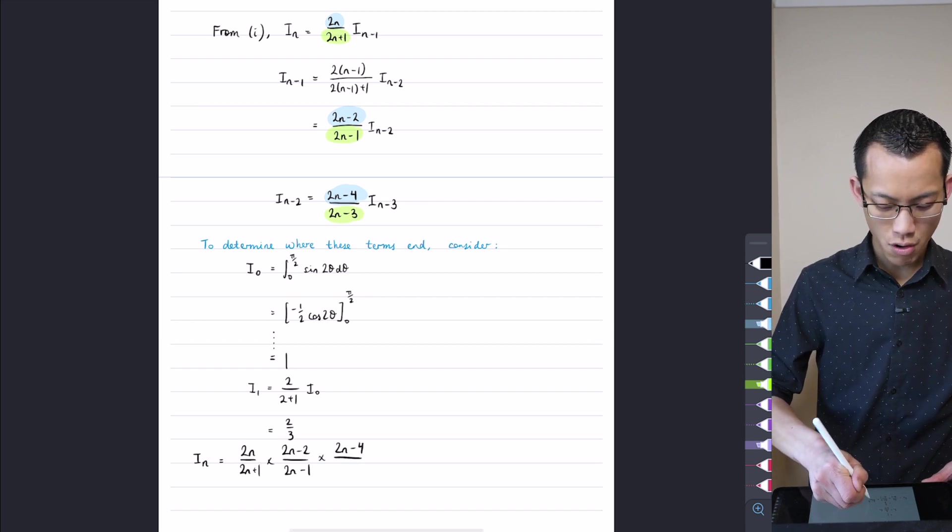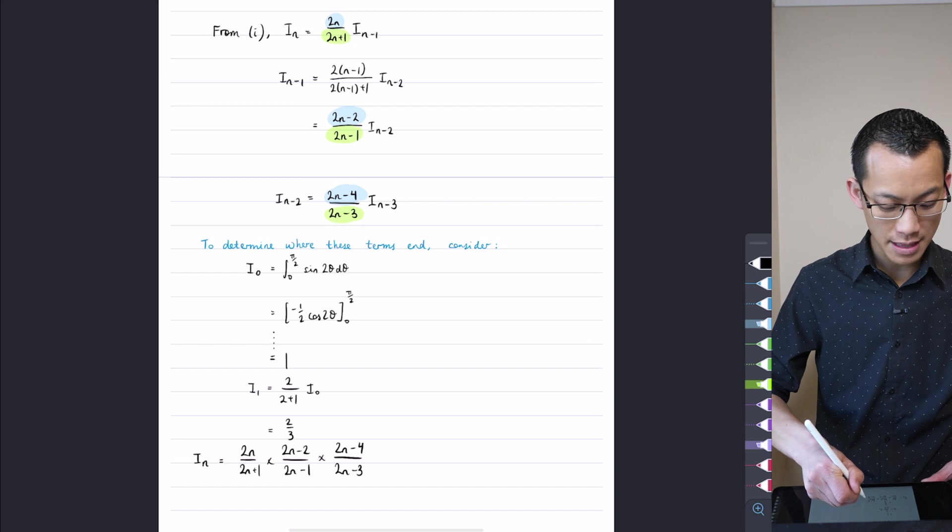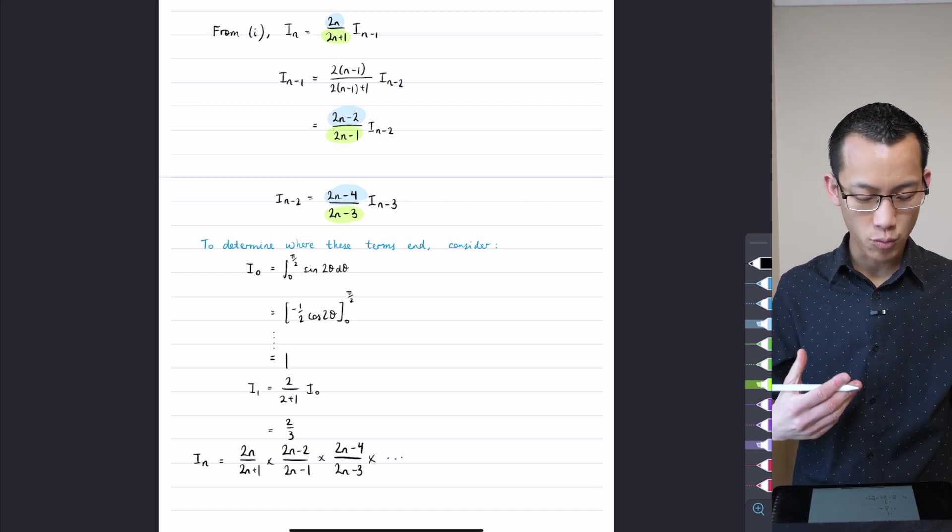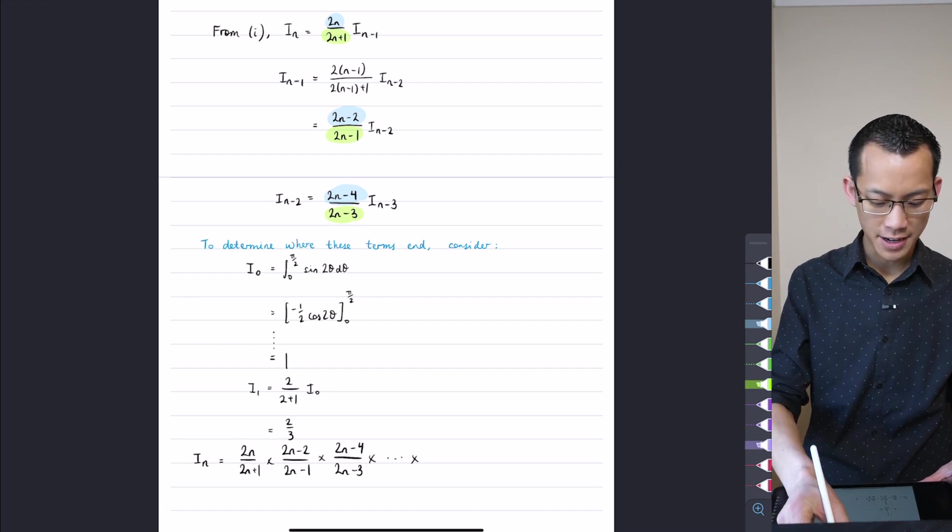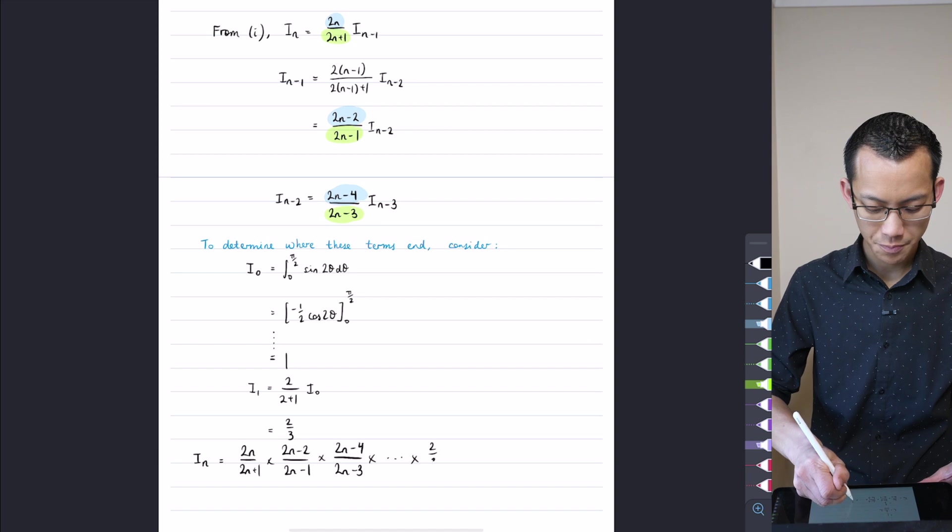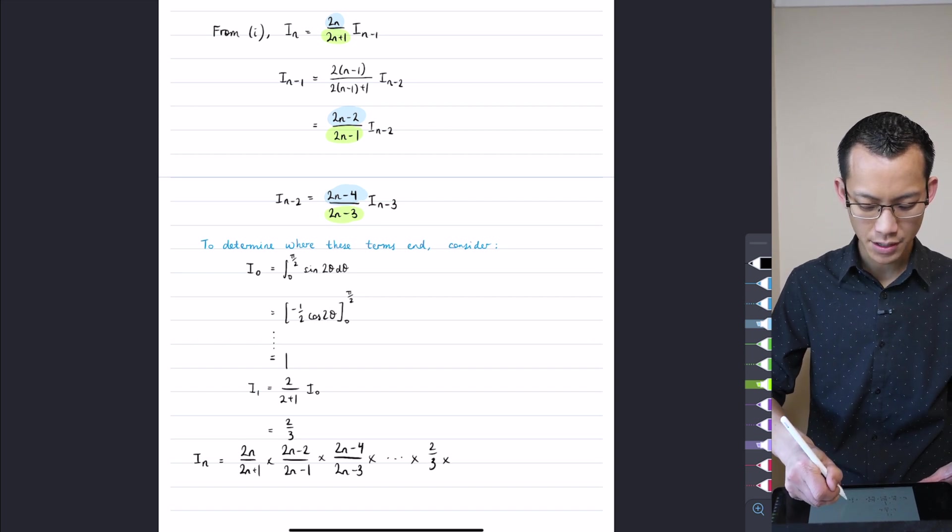What's the next one? It's 2n minus 4 over 2n minus 3. And then this just keeps going, right? I didn't bother to work out what i_n minus 3 was, but the pattern will continue. And then I'm going to end up, where am I going to end up? Here's the second last term, i_1, so it'll be 2 thirds. And then the very last term is 1.